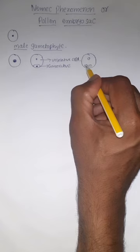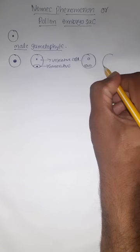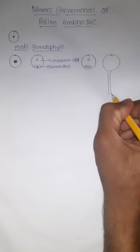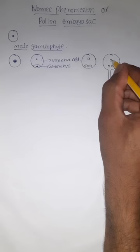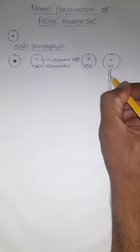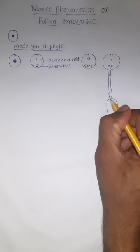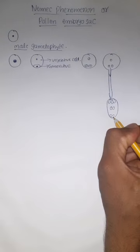These two gametes, after pollen tube formation, what happened? These two gametes along with this vegetative cell nucleus, these three nucleus together moved into pollen tube. Finally, they will reach female gametophyte or embryo sac. This is embryo sac or female gametophyte.